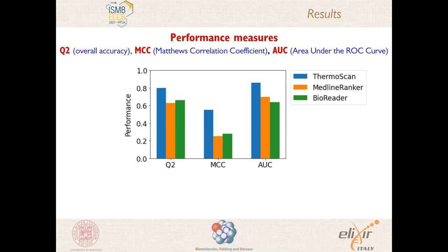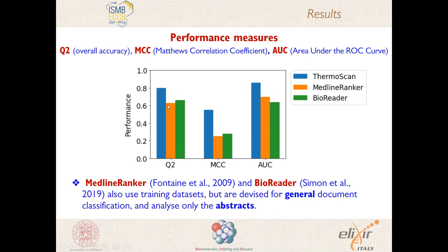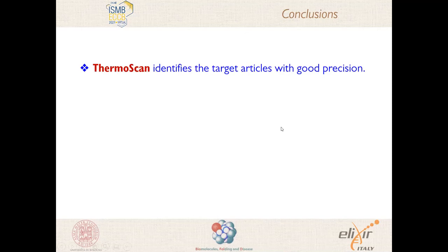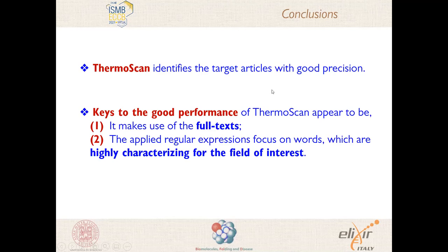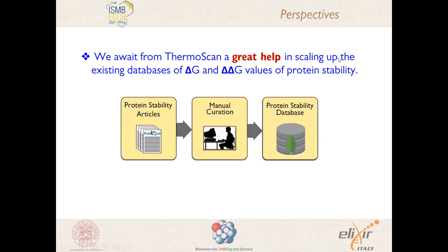It is to be noted that both MedlineRanker and BioReader also use training datasets but are devised for general document classification and analyze only the abstracts. In conclusion, ThermoScan identifies the target articles with good precision, and the keys to the good performance appear to be that it makes use of the full text, and that the applied regular expressions focus on words which are highly characterizing for the field of interest. In perspective, we expect ThermoScan to be of great help in scaling up the existing databases of delta G and delta delta G values of protein stability.